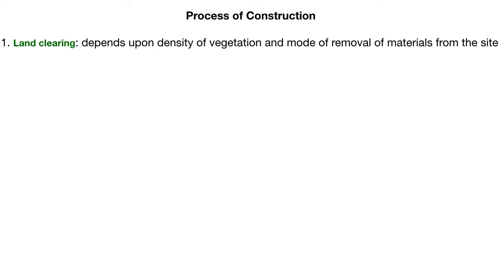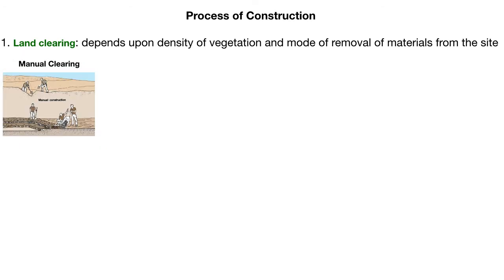The first operation in the construction sequence is land clearing. The site must be cleared of big boulders, stones, trees, and bushes, and the land must be leveled if there are steep slopes or broken surfaces. There are three types of land clearing methods based on the density of vegetation. The first is manual clearing: if there are only small boulders and thin vegetation like small bushes or trees, the site can be cleared by engaging laborers.